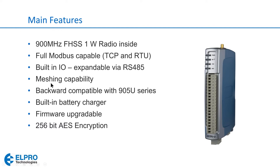The radio portion has meshing capability. Meshing refers to automatic repeater selection — if a normal direct path to a remote radio is lost, the radio will automatically figure out which repeaters to use to get the message to the final destination. These radios are also backward compatible with the 905U series, and are considered the second generation of that product.